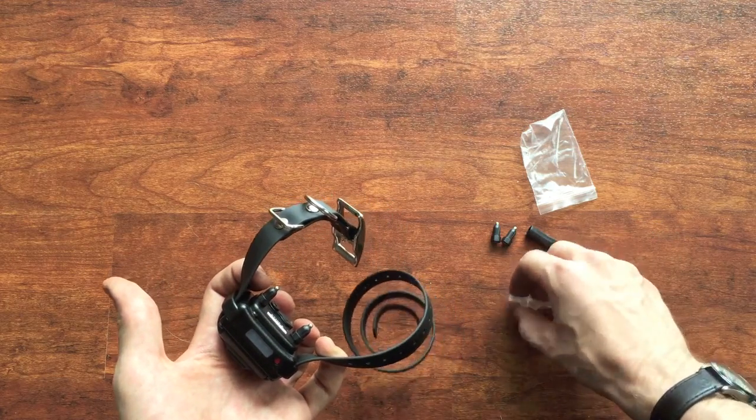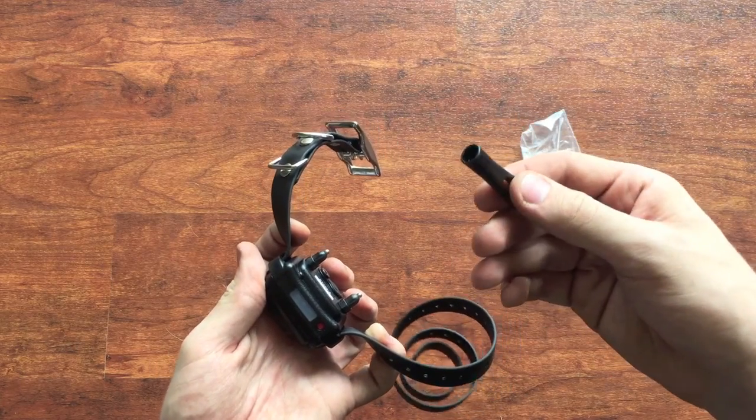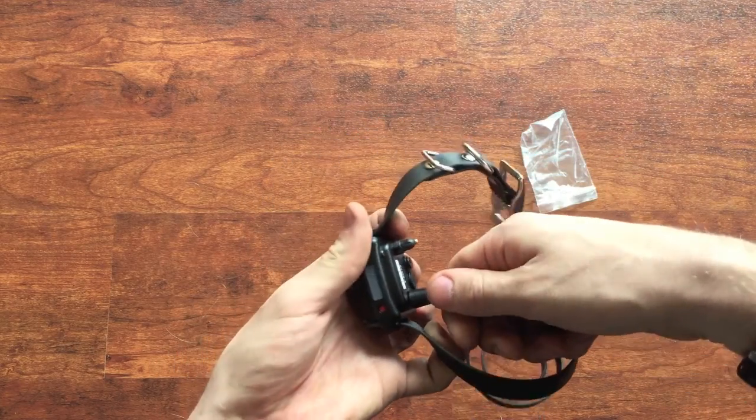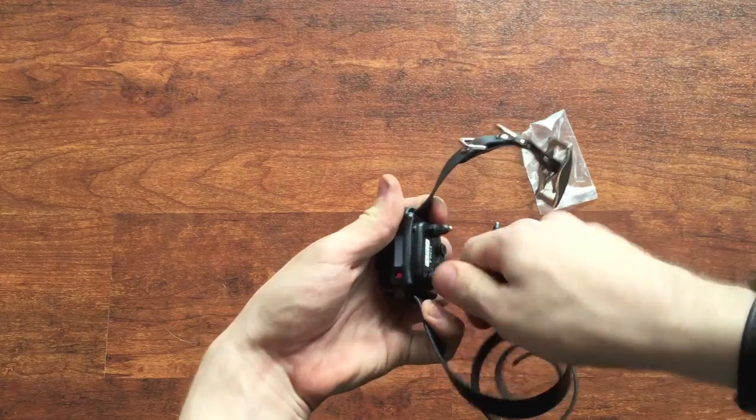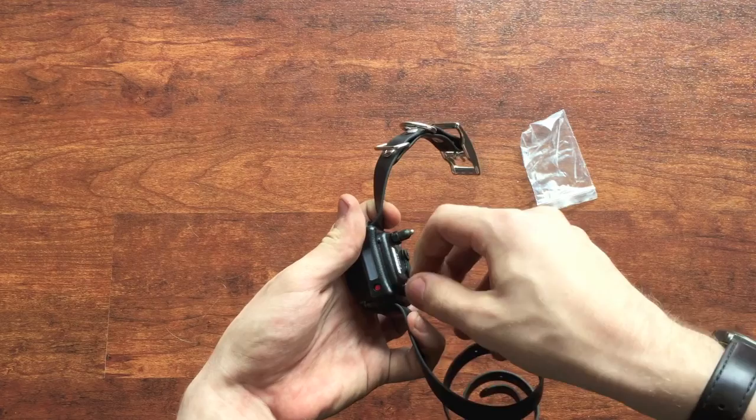So to get the short haired ones off, you just take the tool and stick it over the top of them and twist them to the left to loosen them. And after that they just screw off.